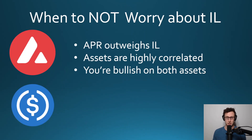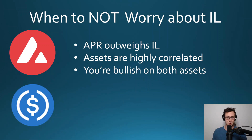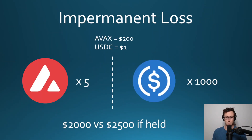So when should you not worry about this? Basically, the overarching thing is when APR outweighs impermanent loss — that's the only time you'd want to provide liquidity. With farms we look at on this channel that have 100% or 150% APR, you'd need a lot of impermanent loss very quickly to make up for that. For example, if a coin quadrupled and you had 20% impermanent loss, that's probably going to happen over a period of maybe six months for a normal coin — which is a lot of time to accrue fees and compound while you're suffering that impermanent loss.